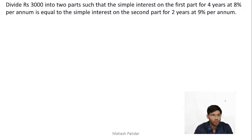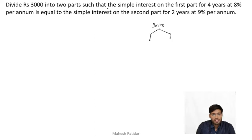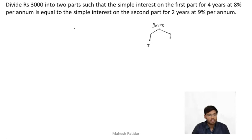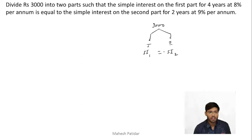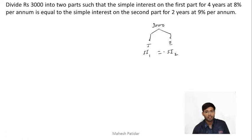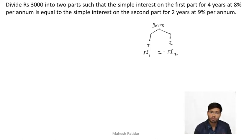Next question: Divide rupees 3000 into two parts such that the simple interest on the first part at 8% per annum for 4 years equals the simple interest on the second part at 9% per annum for 2 years. Let the first part be X, so the second part = 3000 − X.